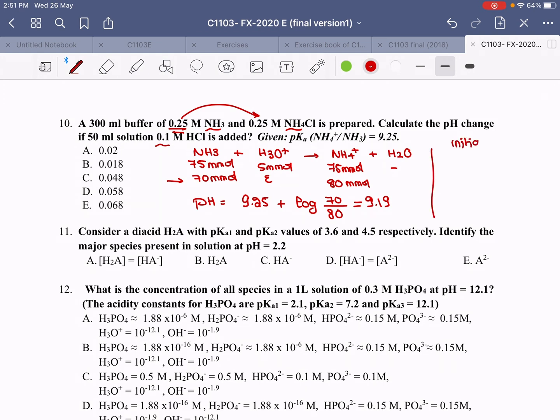Initially, before the addition of this HCl, the pH can be pKa, which is 9.25.